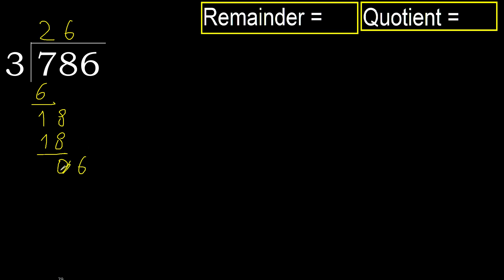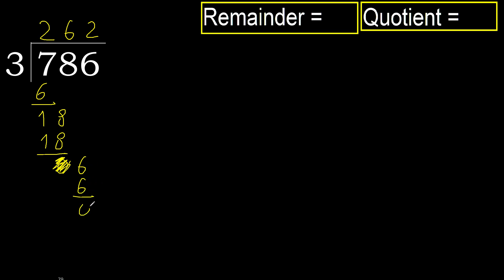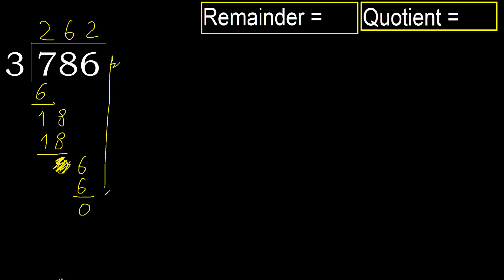Bring down 6. 3 multiplied by 2 is 6, which is not greater. Subtract. Next, there is no number, therefore finish it.